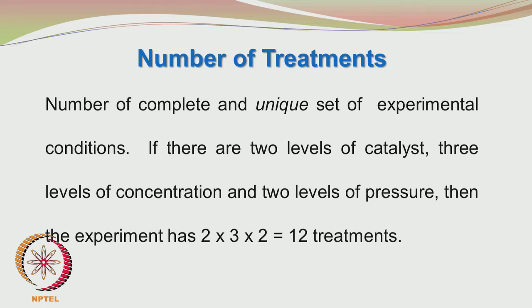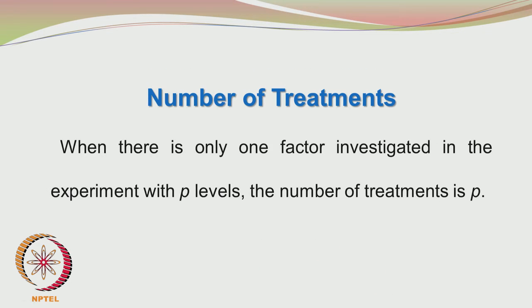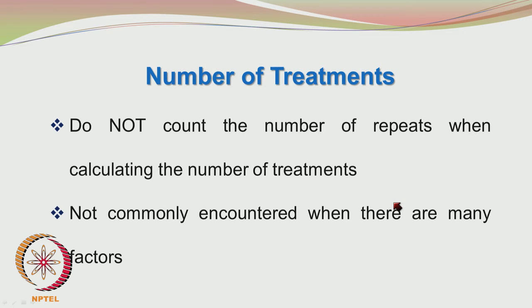The number of treatments refers to the complete and unique set of experimental conditions. If there are 2 levels of catalyst, 3 levels of concentration and 2 levels of pressure, then the experiment has 2 × 3 × 2 = 12 treatments. When there is only one factor with p levels, the number of treatments is p. Do not count the number of repeats when calculating the number of treatments.